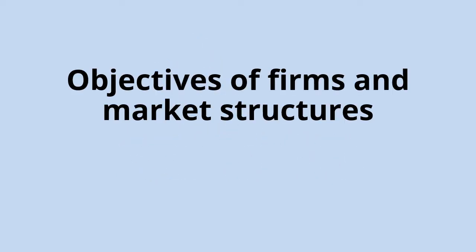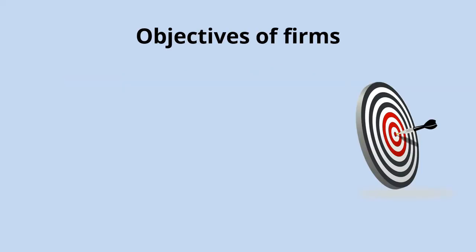This video is just a basic and quite brief introduction to the different objectives of firms and also the different market structures which firms operate in. In economics we start with the basic assumption that firms are profit maximizers — that is their key objective, what they exist to do. They try and maximize their profits. When we're looking at the different economic agents, firms are one of those economic agents, and we say the objective of firms is to maximize profits.